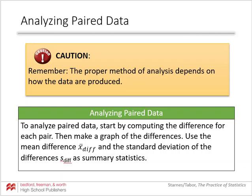Determining whether it is more appropriate to use paired data or a two-sample t-test depends on how the data are produced. If the data gives us two pieces of information from one individual, that would be a paired scenario. Or if there is a natural way to pair up two separate individuals — as in the case of the twins — that could also be a paired scenario. When analyzing paired data, we take a two-variable situation and convert it to a one-variable situation by analyzing the difference of the two samples.